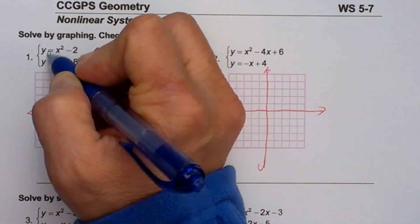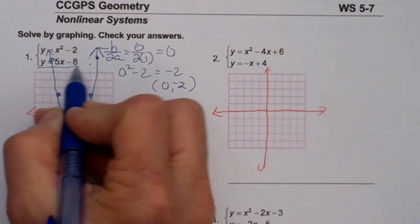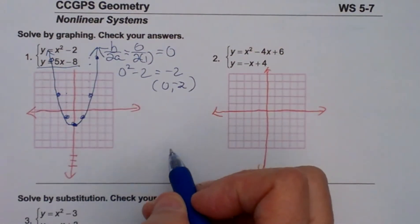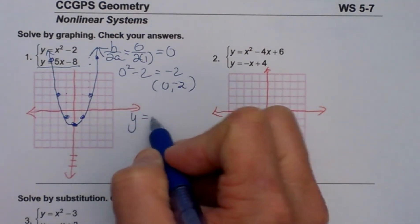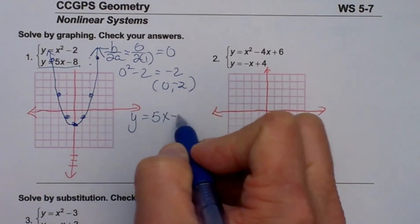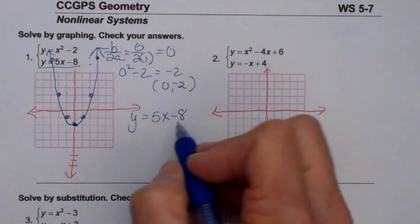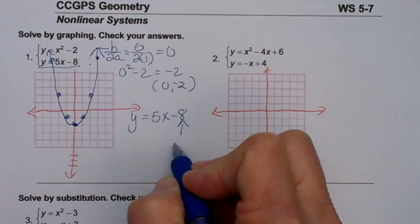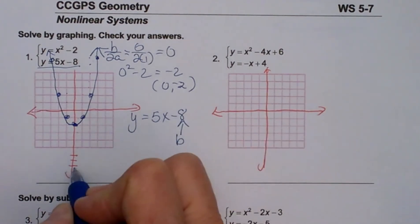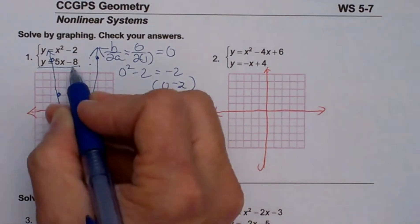Now I just need to graph my line. In this case I have y equals 5x minus 8. I am going to write that over here, just so we can see it a little bit better. My y intercept, or b, is negative 8.